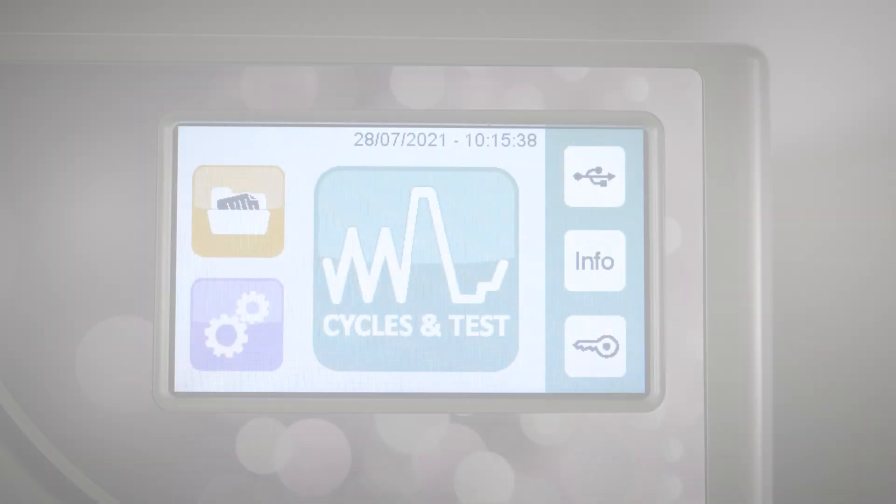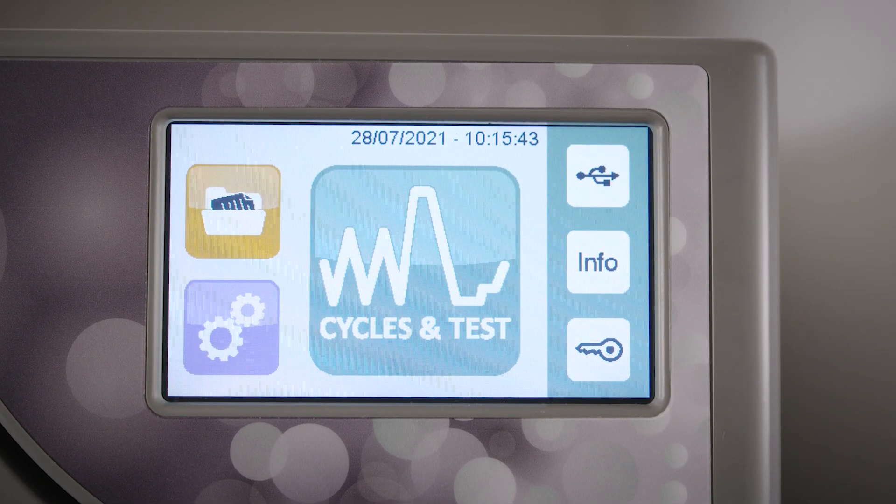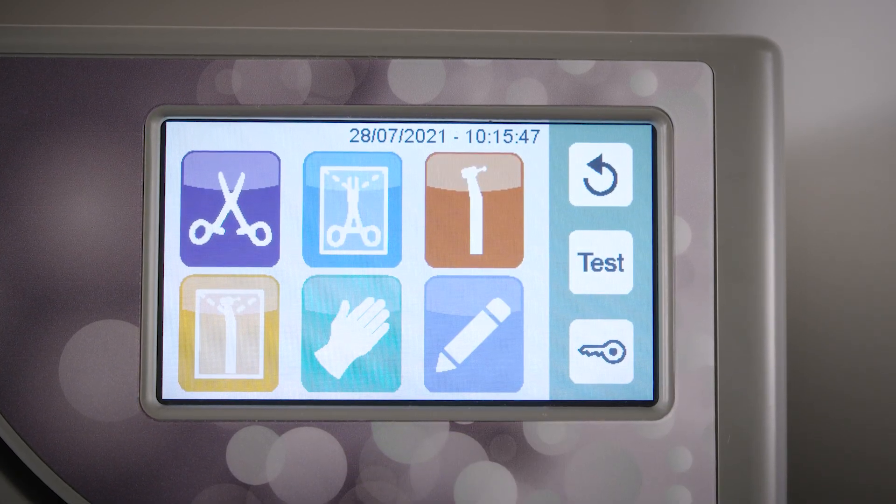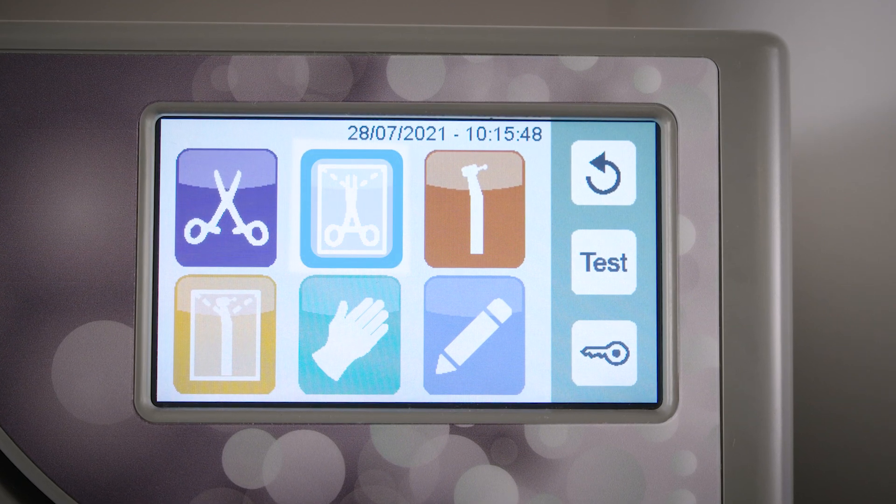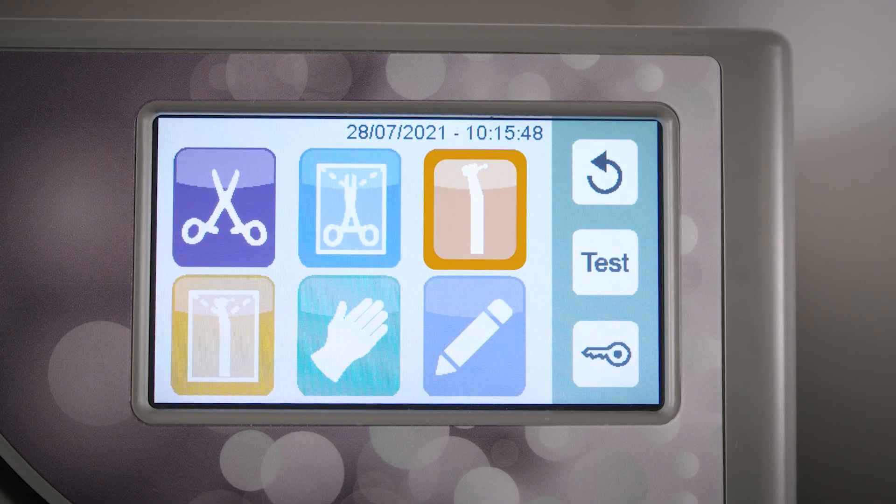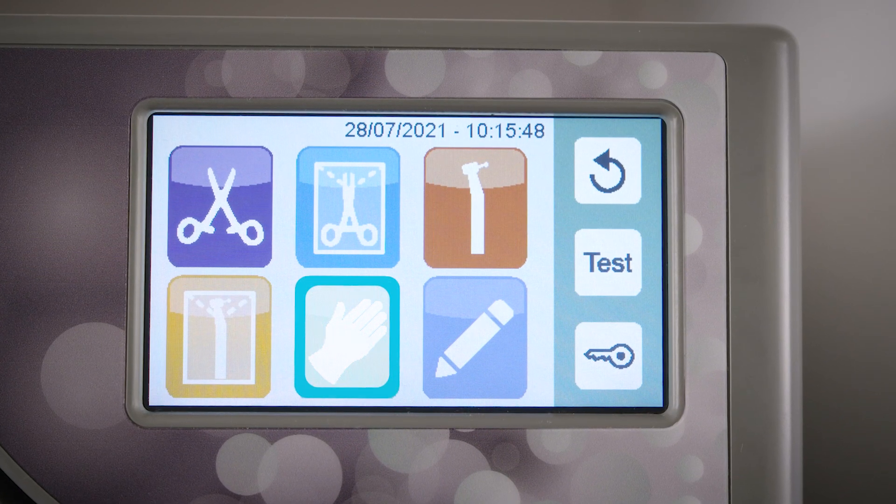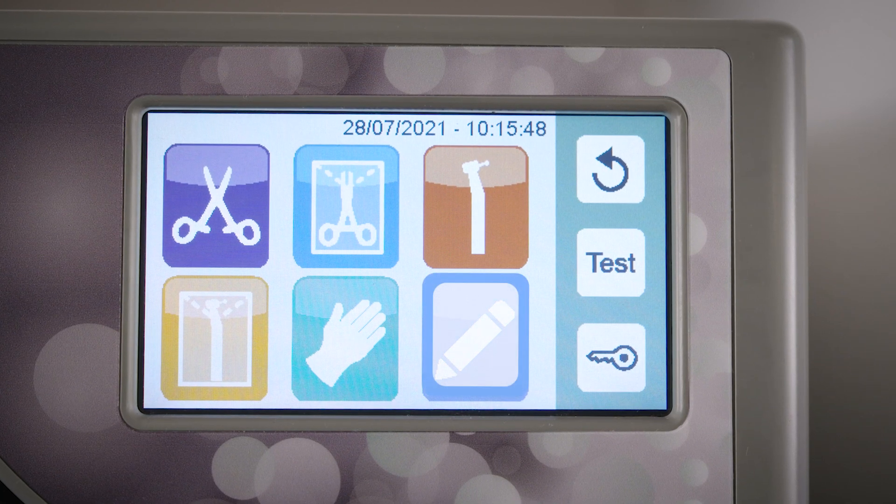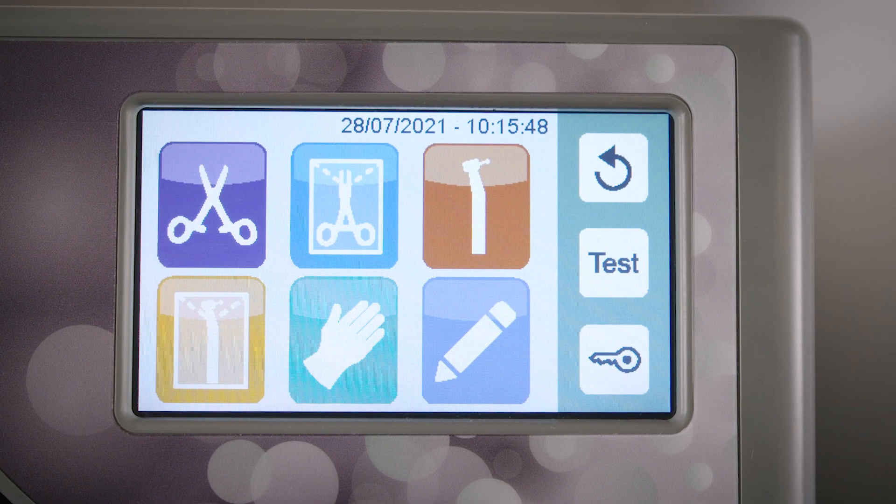The cycles and test icons give you access to the Bravo G4's sterilization and test cycles. The Bravo G4 offers five validated cycles including Solid Unwrapped, Solid Wrapped, Hollow Unwrapped, Hollow Wrapped, and Rubber and Plastic Cycle. In addition, a user-defined custom cycle is available. Please consult the operator's manual for more information about the custom cycle.